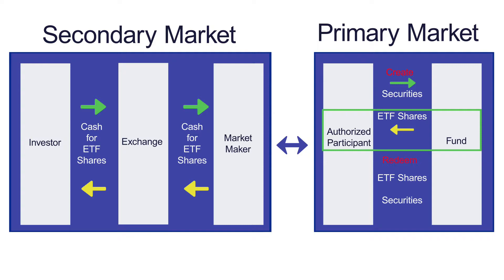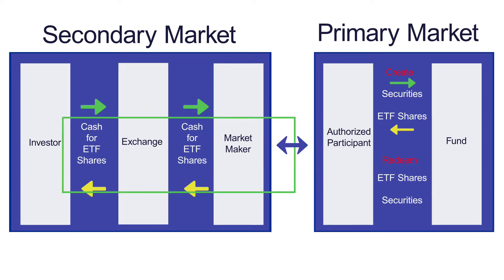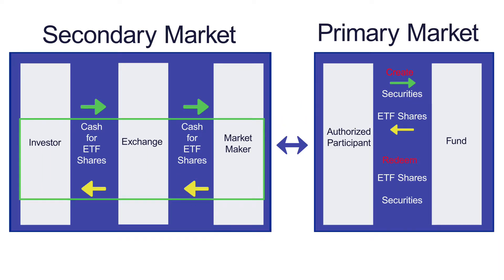At the end of the day, the market maker has no position — they have delivered the basket and flattened out their short position. This is how assets move into the fund and how new shares are created. It's really more of a back-office function that happens once a day at the NAV of the fund, not something investors need to be concerned about, but good to understand how the mechanism and wrapper of ETFs work.